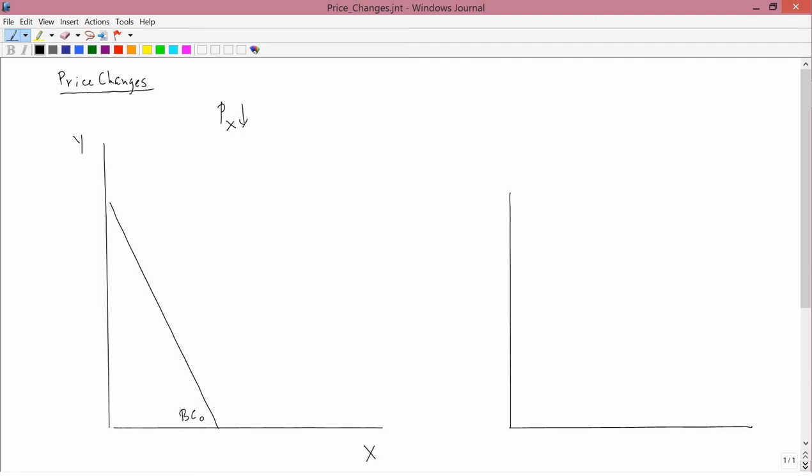The first thing to remember when you have a fall in a price is that the affordable set needs to expand. A price has gotten lower, that's good news for the consumer. The consumer can afford to buy more stuff, so the affordable set goes up. Don't make the mistake of thinking that because the price of X has fallen, that the affordable set has to fall. That's wrong and will start you off on completely the wrong track.